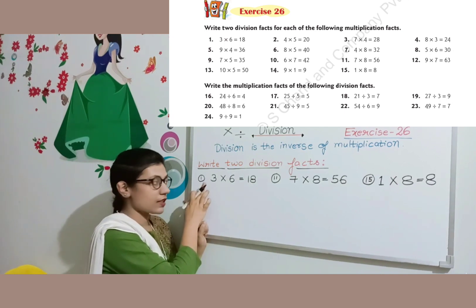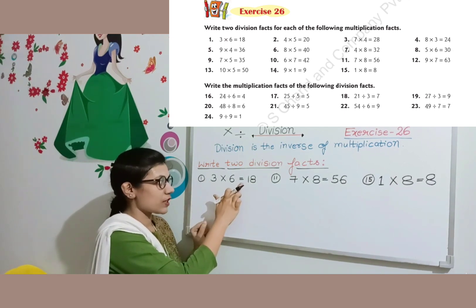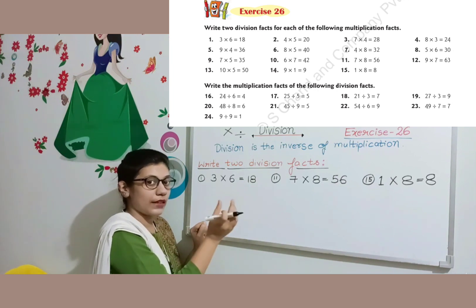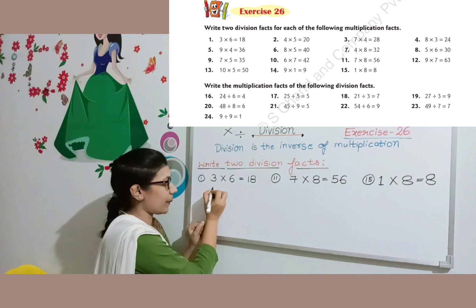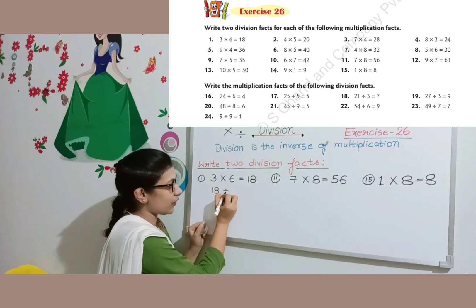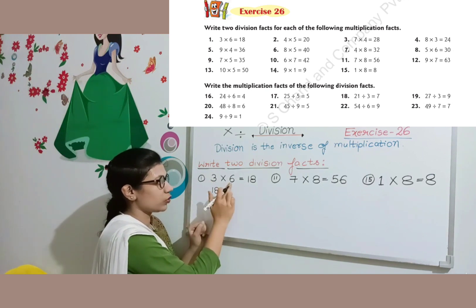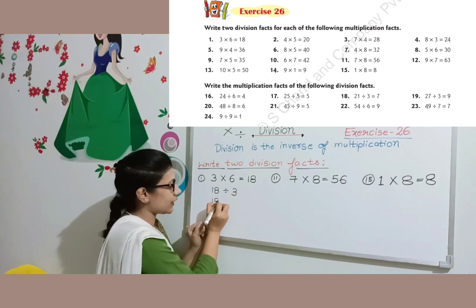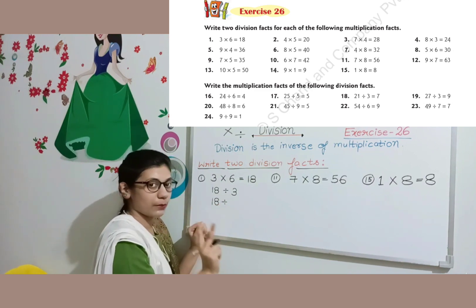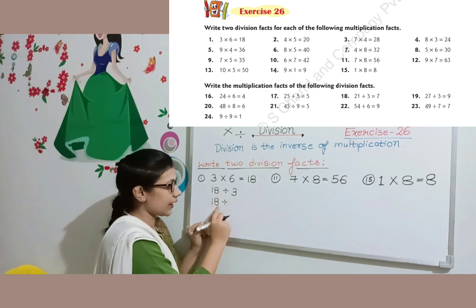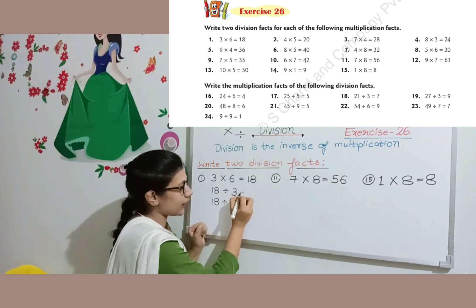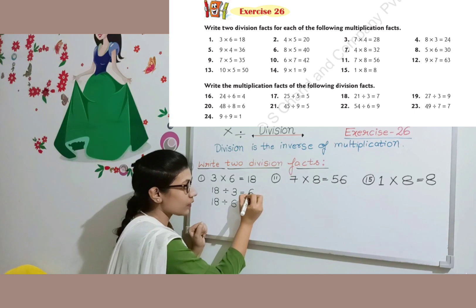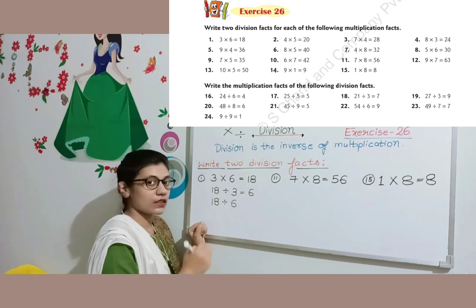First question from your exercise: 3 multiplied by 6 is equal to 18. The biggest number is 18, so you divide 18. There are two other numbers — 3 and 6 — so you write two division facts. First: 18 divided by 3. Second: 18 divided by 6. From every multiplication fact, you get two division facts.